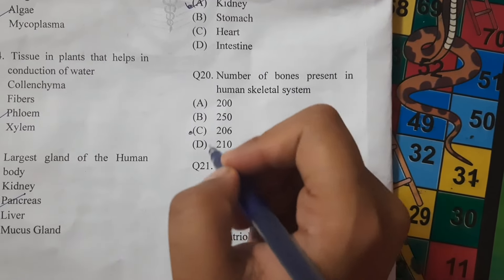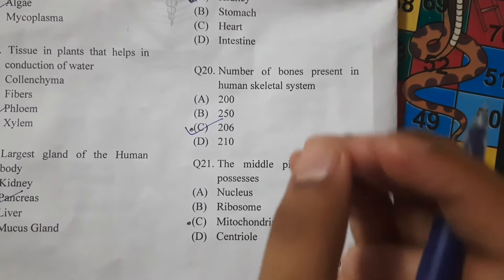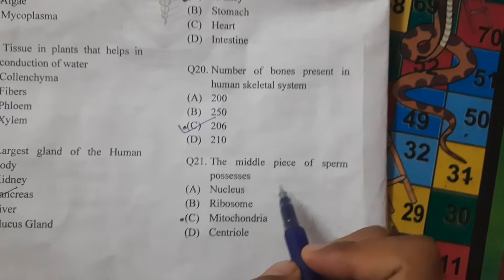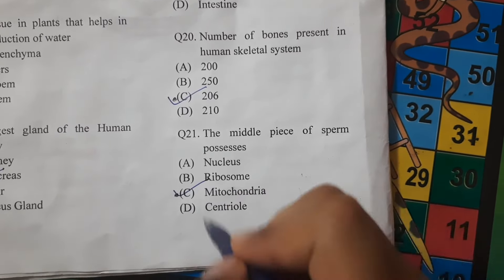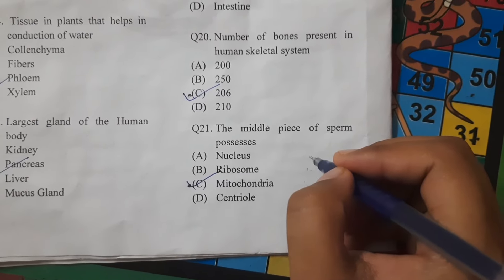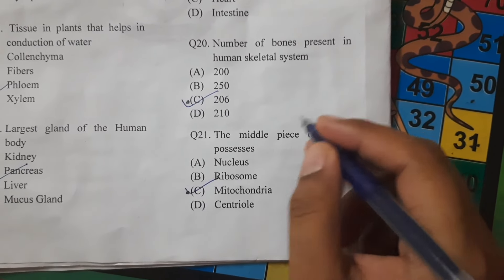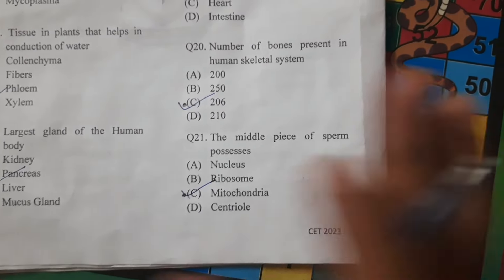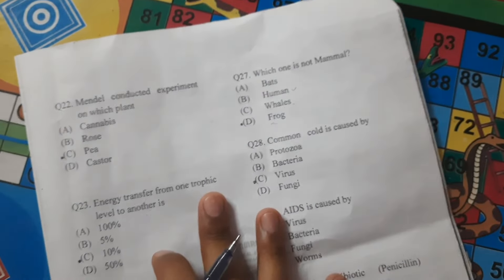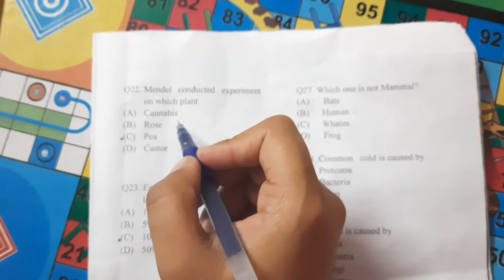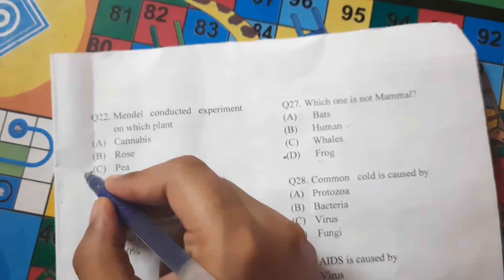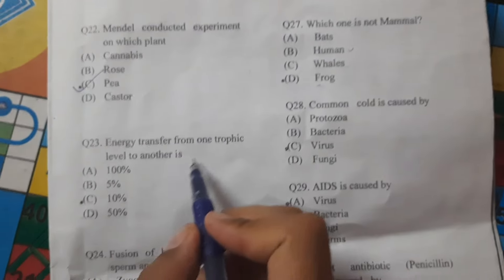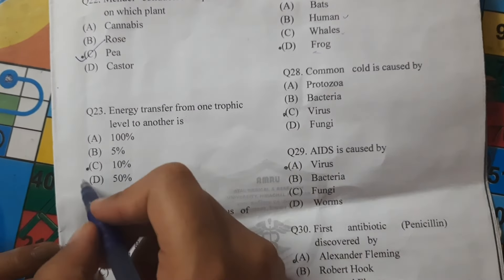Henle's loop is present in the kidney. The number of bones in the human skeletal system is 206. The middle piece of sperm possesses mitochondria. The sperm has three regions: head, body, and tail. Mendel conducted his experiments on the pea plant. Energy transfer from one trophic level to another is 10%.